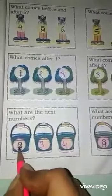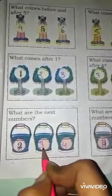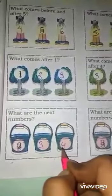What are the next numbers? Here it is 2. The next number is 3. Then the next one is 4.